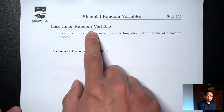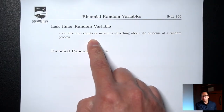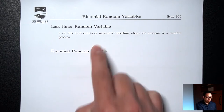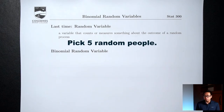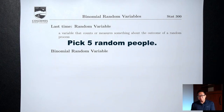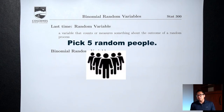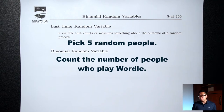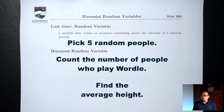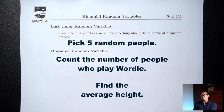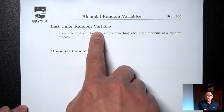Last time we talked about random variables, which were variables that count or measure something about the outcome of a random process. An example was picking 5 random people — picking 5 random people doesn't give you a number by itself. To force things to be numbers, we can count or measure something about these 5 people. We could count the number who played Wordle, or find the average height. In both cases, you end up with a number — a random variable.